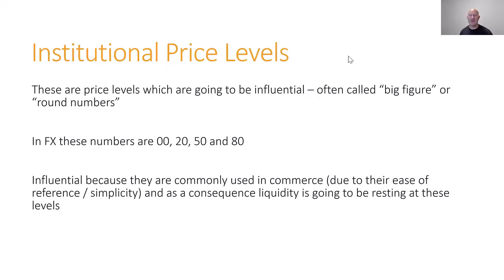Now we'll cover institutional price levels before jumping into our trade example. These are price levels which are going to be influential on price action — often called big figures or round numbers by others, but ICT calls them his institutional price levels. In FX these are the typical round numbers of double zero, 20, 50, and 80. The reason these numbers are influential is because they're commonly used in commerce for their ease of reference and simplicity, and as a consequence there's always going to be liquidity resting at these institutional price levels.